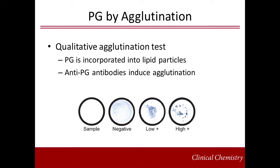A commercially available agglutination test for the qualitative detection of PG is available. PG from the amniotic fluid is incorporated into lipid particles. Anti-PG antibodies are then added. If PG is present in the amniotic fluid, then there is agglutination of the lipid particles. Visible inspection of the agglutination reaction is conducted to determine the presence or absence of PG. The results from this test are qualitative and reported as either negative, low positive, or high positive. Testing results are not affected by blood and meconium when they are present in amniotic fluid.